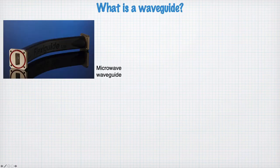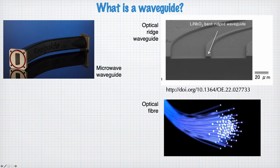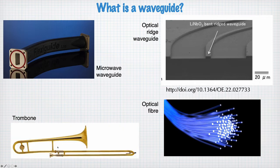Here are some examples of waveguides. This first example is a microwave waveguide where electromagnetic waves at microwave frequency propagate through a rectangular cross-section pipe. This is an optical waveguide with contrast in the refractive index that contains light traveling along it. An optical fiber is an example of a waveguide. A trombone or any other wind instrument is an acoustic waveguide where sound waves propagate through the pipe.